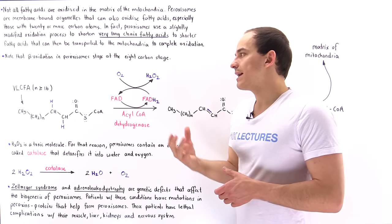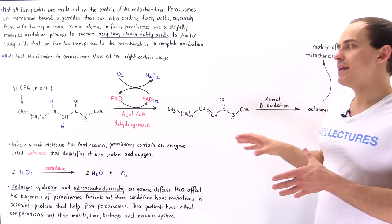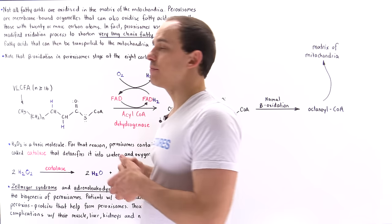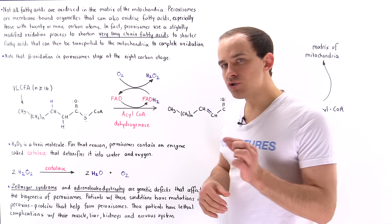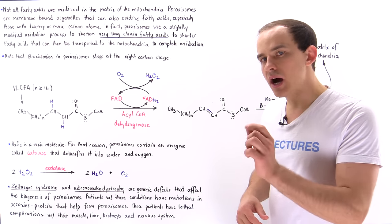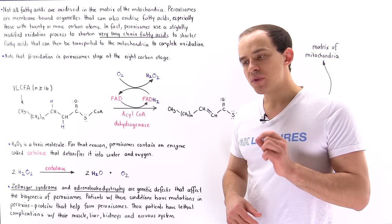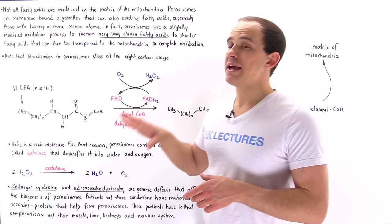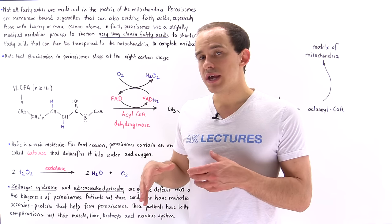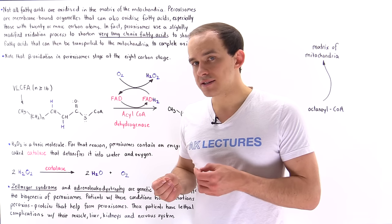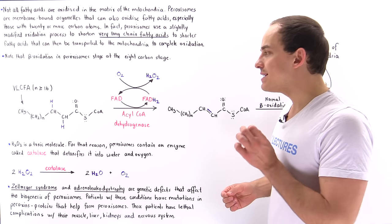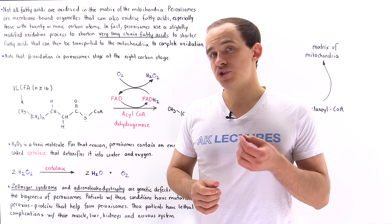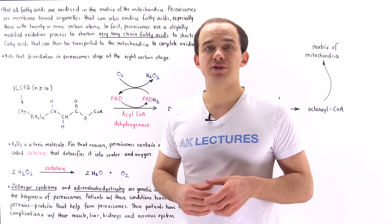Now what exactly is the major difference between the beta oxidation process that takes place inside our mitochondria and inside peroxisomes? The major difference is step one of beta oxidation. Remember that in step one of beta oxidation inside the matrix of the mitochondria, we have an enzyme that catalyzes a reaction in which we oxidize the fatty acid and that helps us generate an FADH2 molecule.